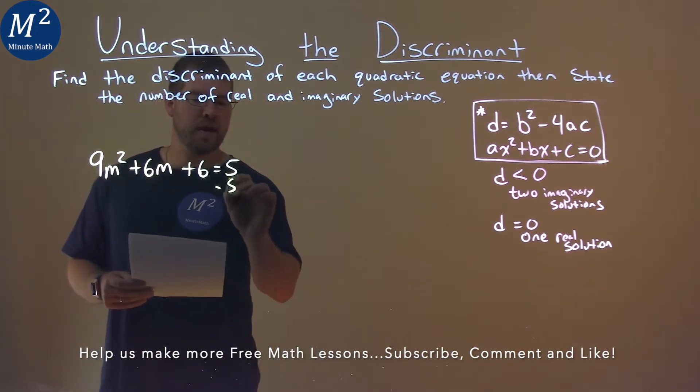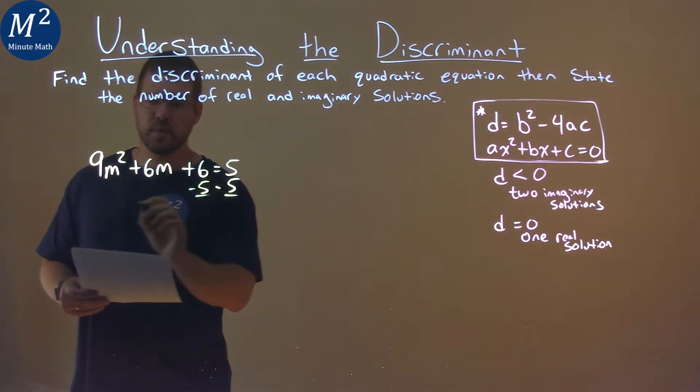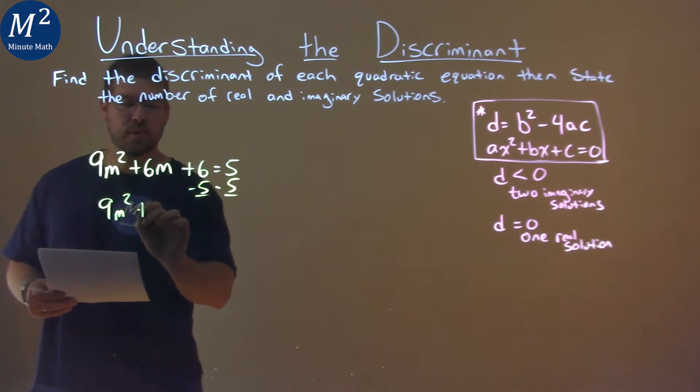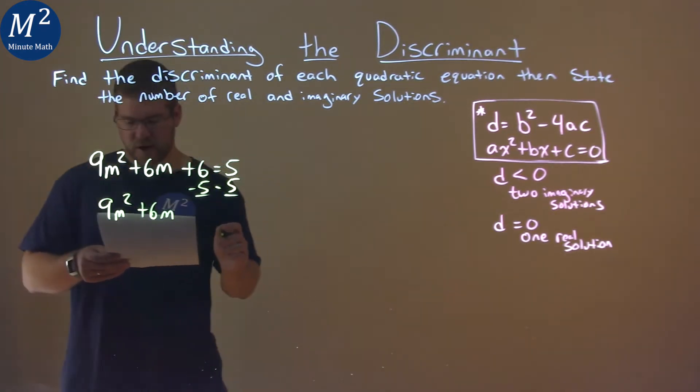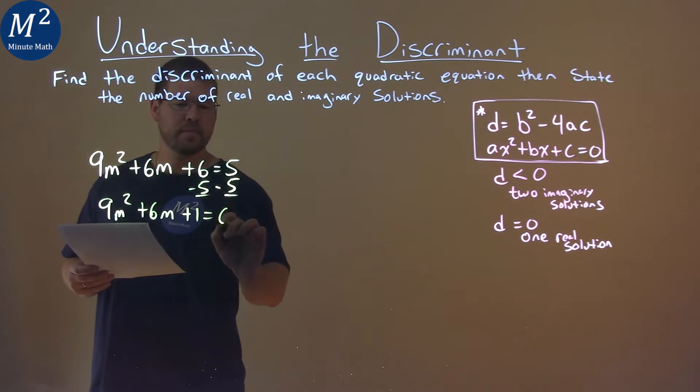First thing I want to do is subtract 5 from both sides. 9m squared plus 6m, and 6 minus 5 is 1, and that equals 0.